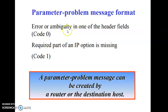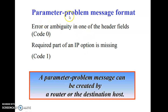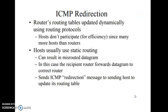Next is the parameter problem message. This message is sent when there is a problem with the parameter of the header fields or when an IP option is missing. From the name itself, when some header field parameters have a problem, this message is generated. A parameter problem message can be created by a router or the destination host.